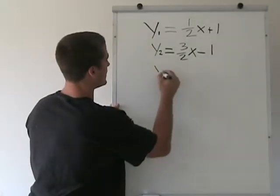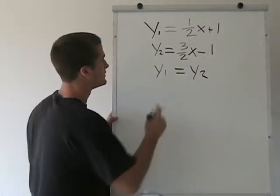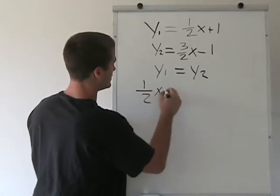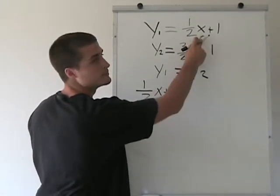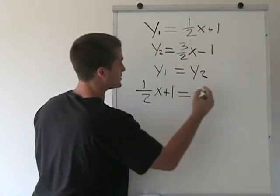So we have y1 equal to y2 to find out where the two functions meet. So y1 is 1 half x plus 1 from up here, and y2 is 3 half x minus 1.